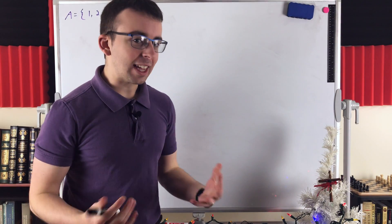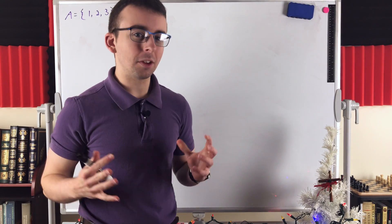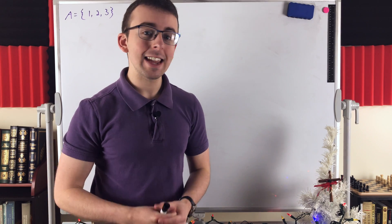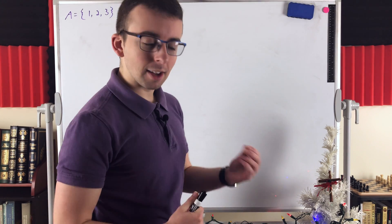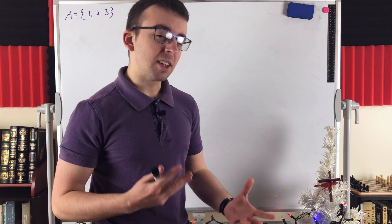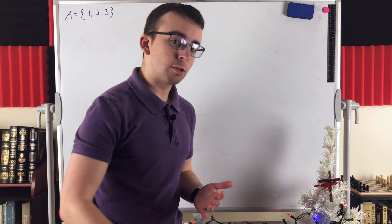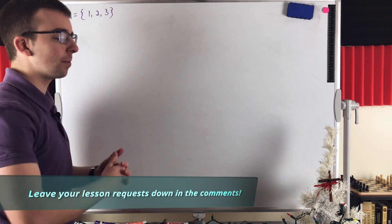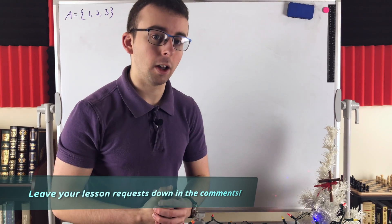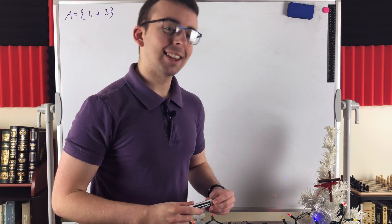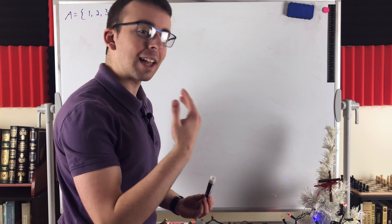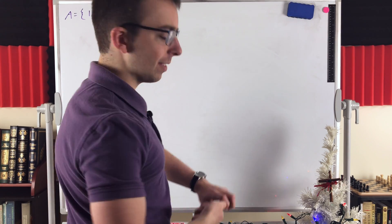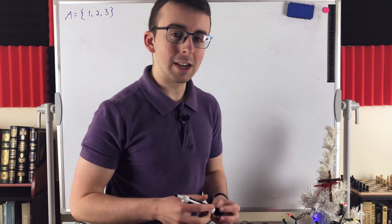Listing all of the subsets of a given set can be a difficult and at times irritating procedure. It's really easy to make a mistake and miss one of the possible subsets. This, of course, is something you've got to be able to do when you're constructing power sets. The power set of the set A, for example, is the set containing all of A's subsets. So in today's Wrath of Math lesson, we're going to go through a reliable and mechanical procedure for finding all of the subsets of a given set using a sort of tree diagram.